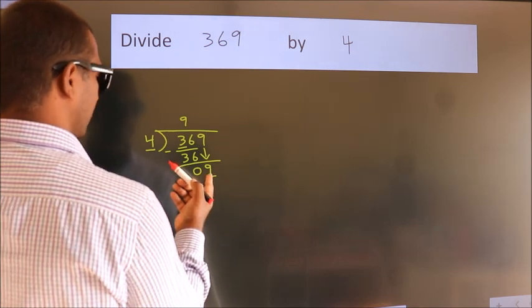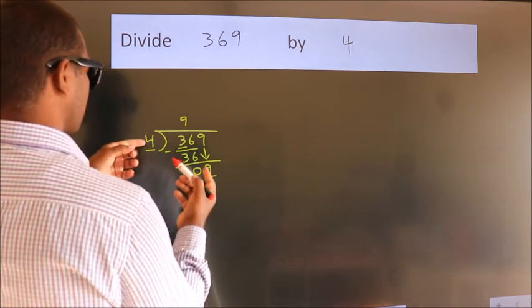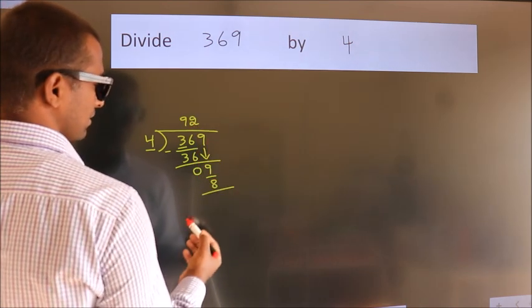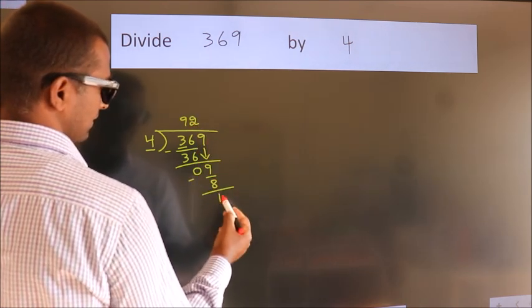A number close to 9 in the 4 table is 4 twos, 8. Now we subtract. We get 1.